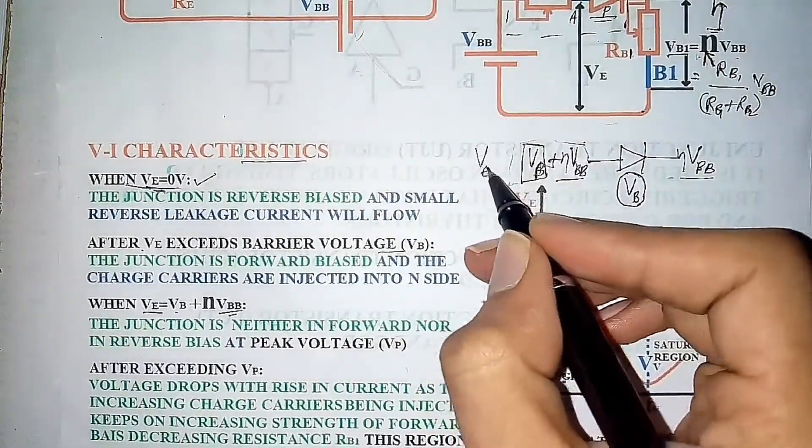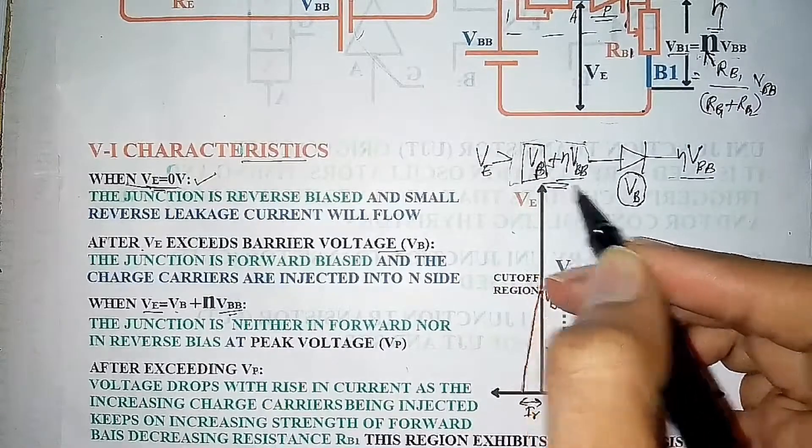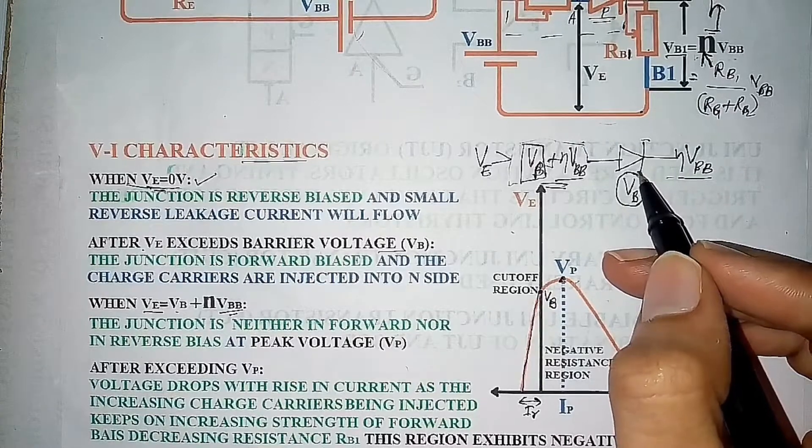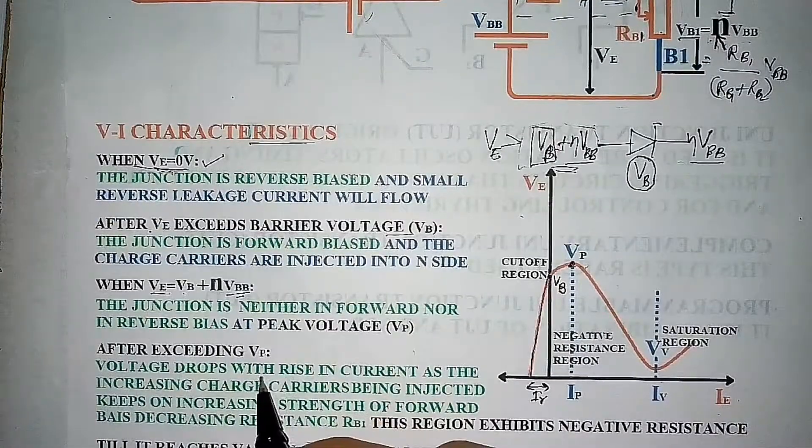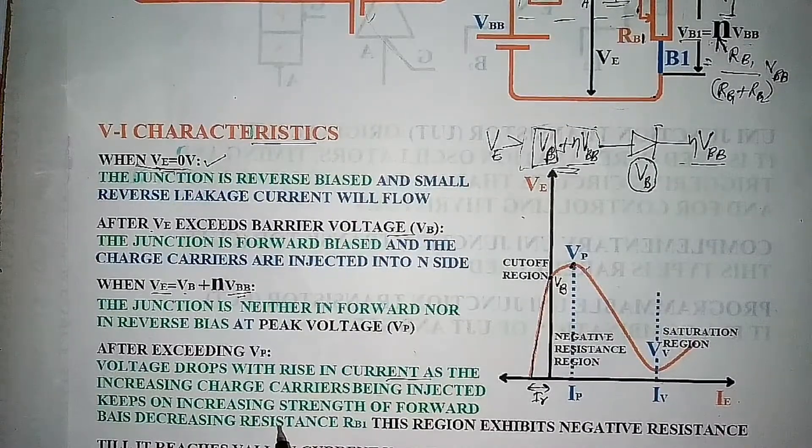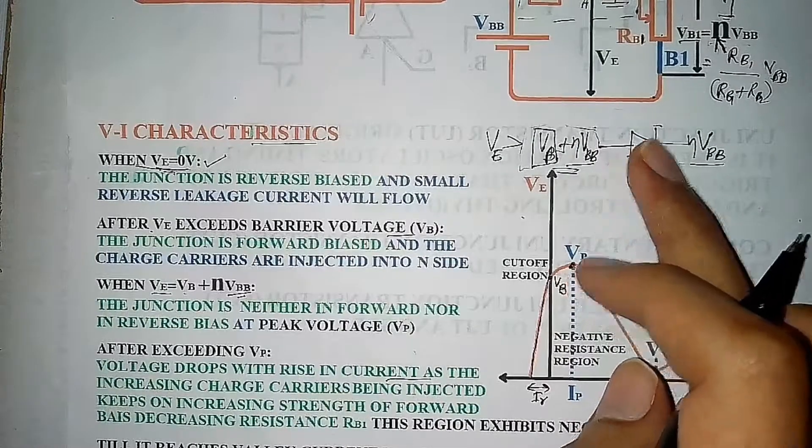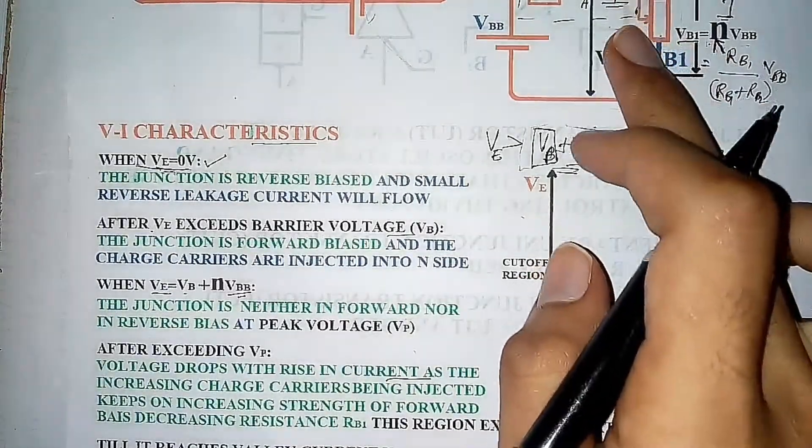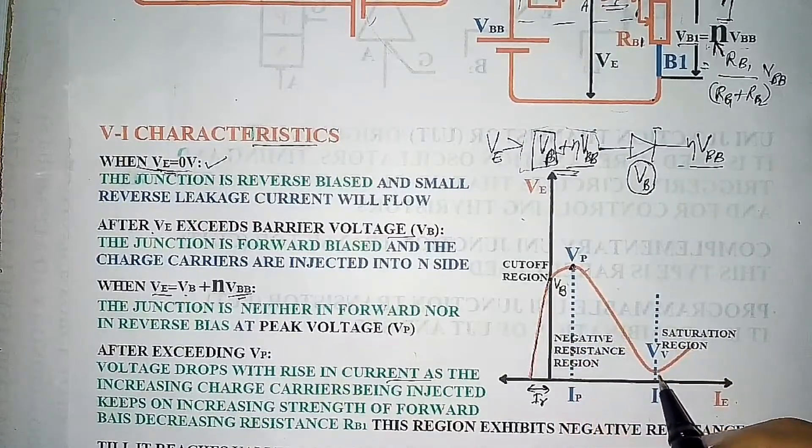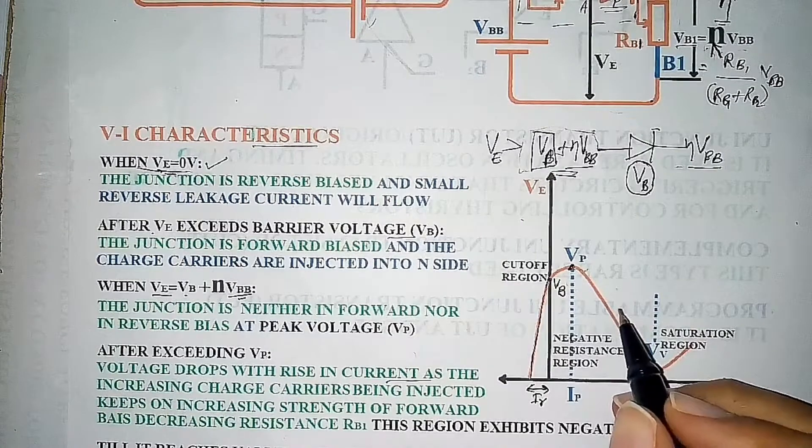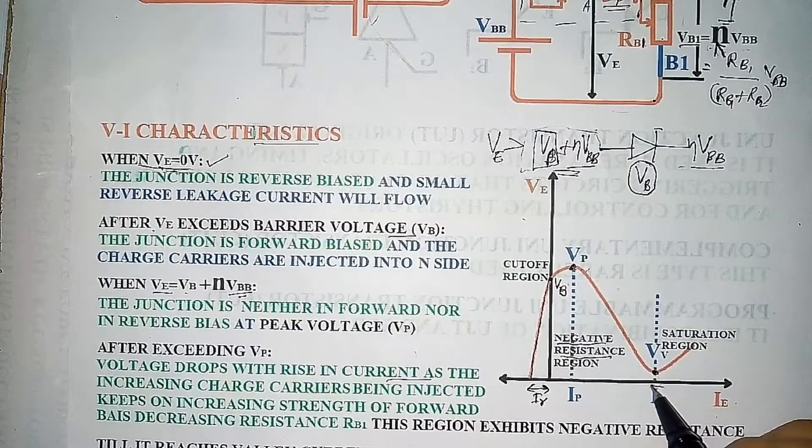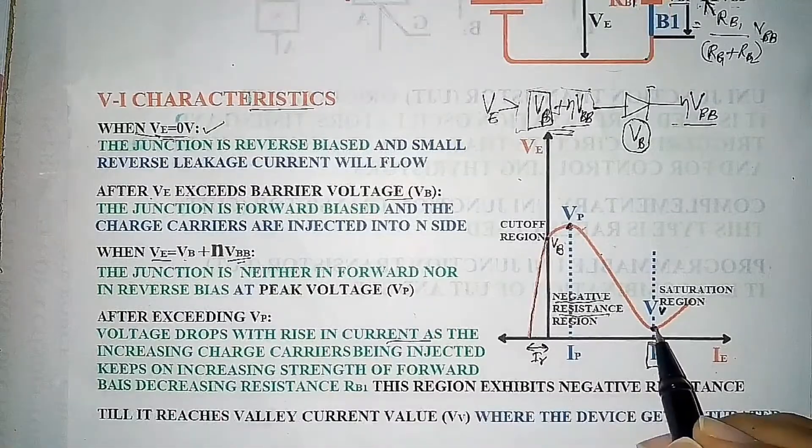After voltage VE exceeds the peak voltage in semiconductor, the resistance will depend upon the dopant concentration. The voltage drop with raising current as increase in charge carriers being injected keeps on increasing the strength of forward bias, decreasing the resistance value RB1. So, as current increases, the voltage value will decrease which indicates the UJT is on and is exhibiting negative resistance. This will continue till the current value reaches valley current where the device gets saturated.